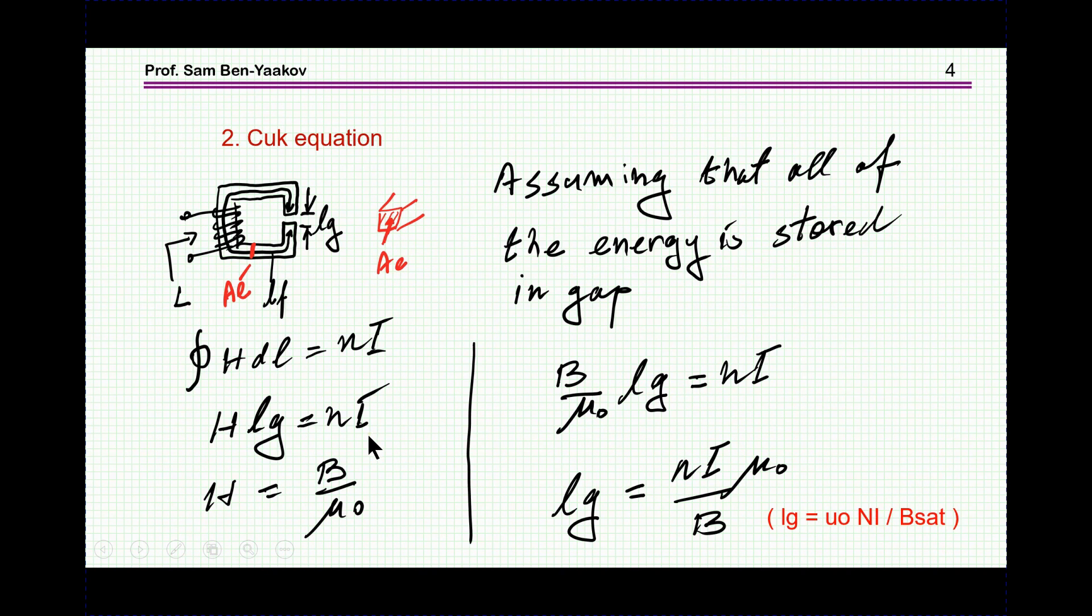On the other hand, Chuck's equation starts in a different way. Starting with this relationship, HDL equals N times I. Since most of the energy or the magnetic field intensity within the gap is the largest and much larger than magnetic field within the ferrite, I can change the path and just replace it by LG where H prevails.